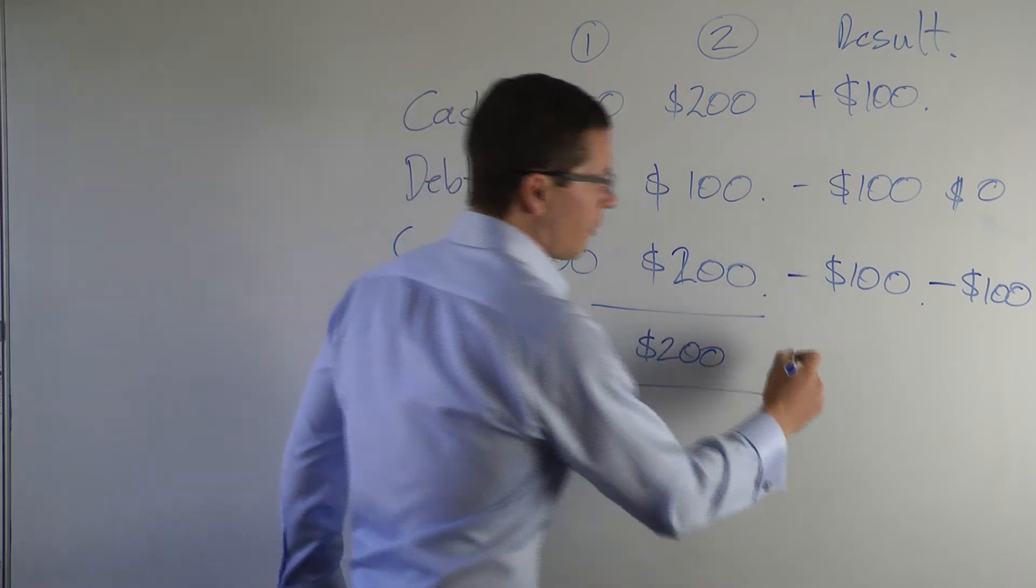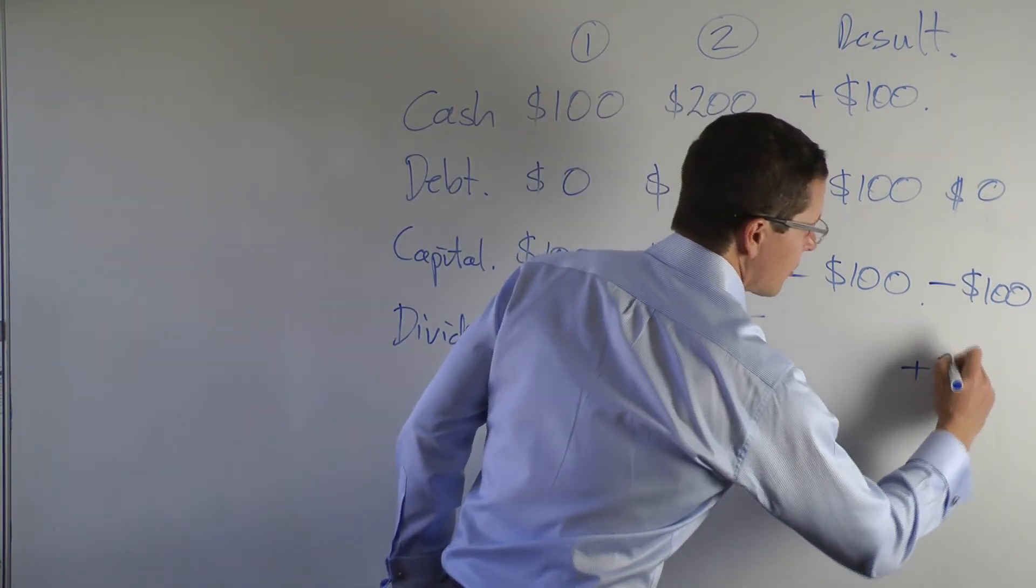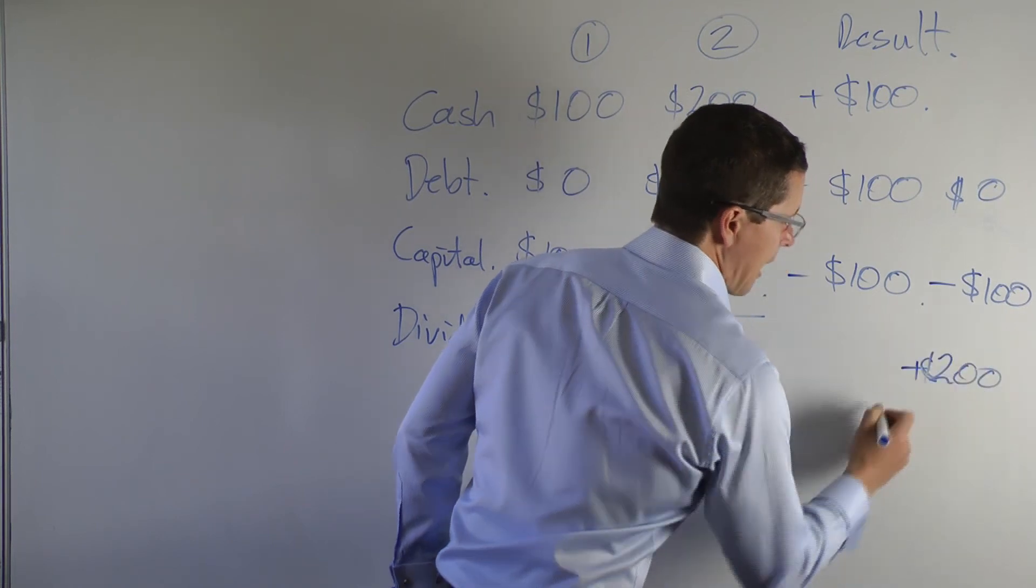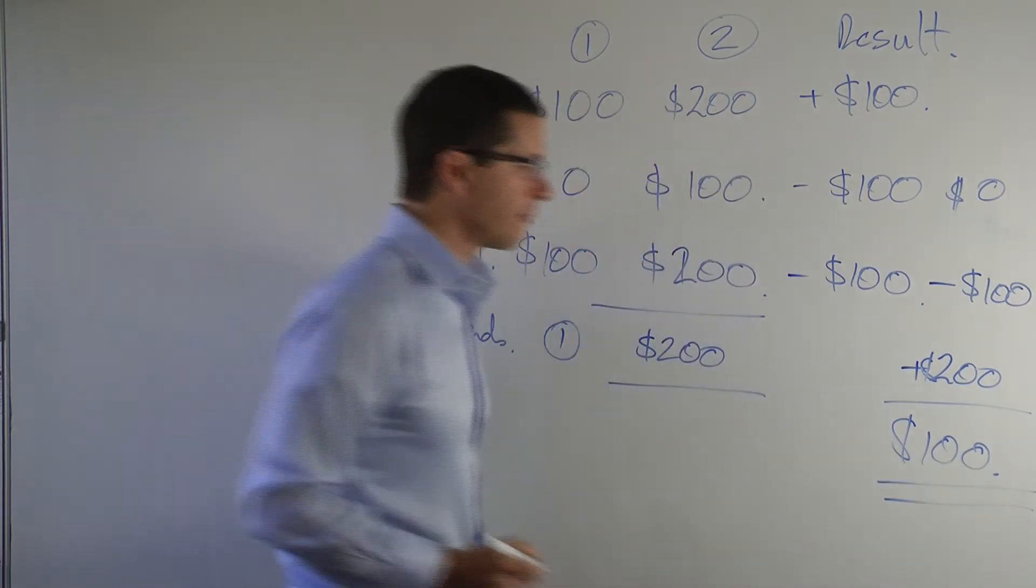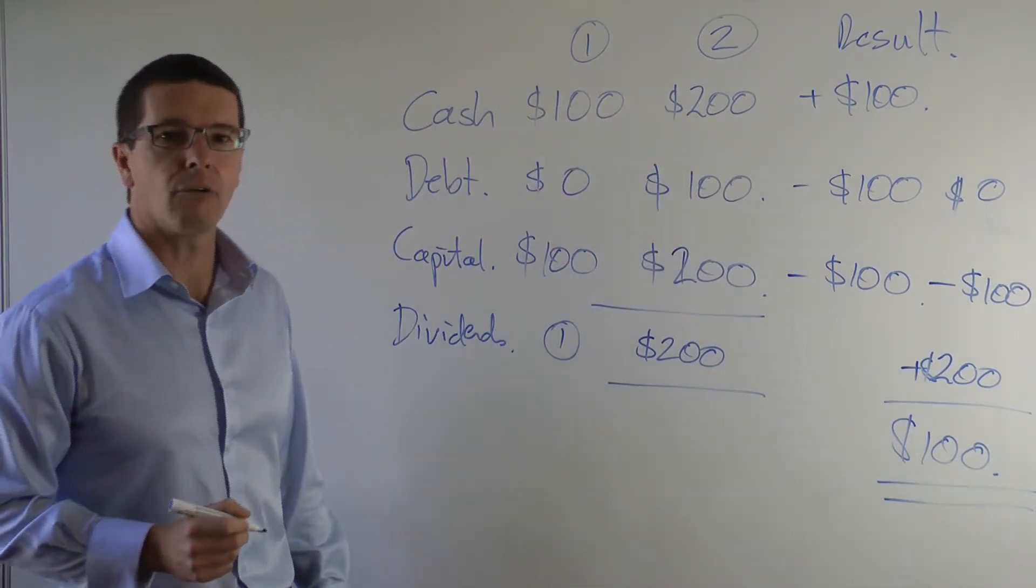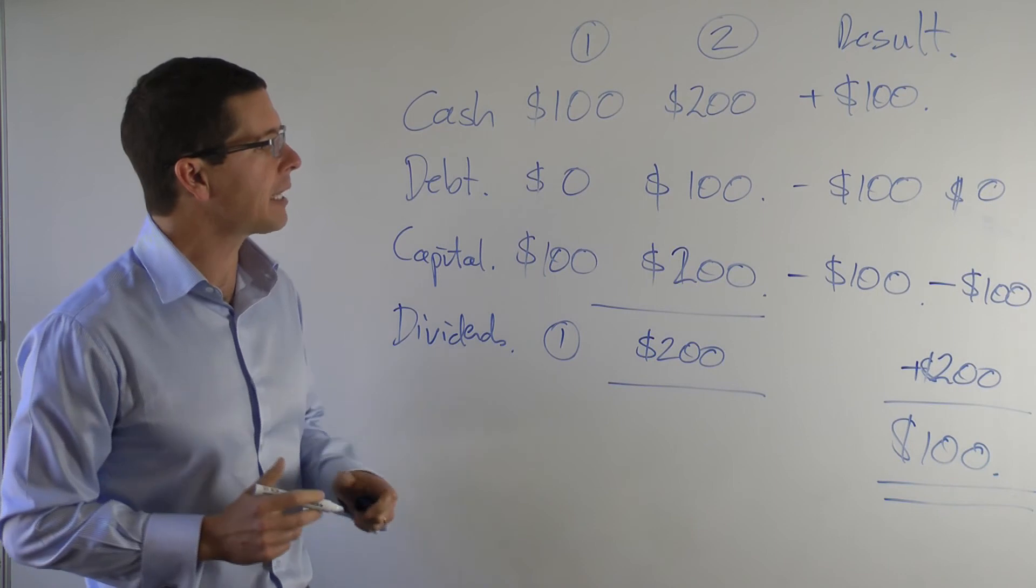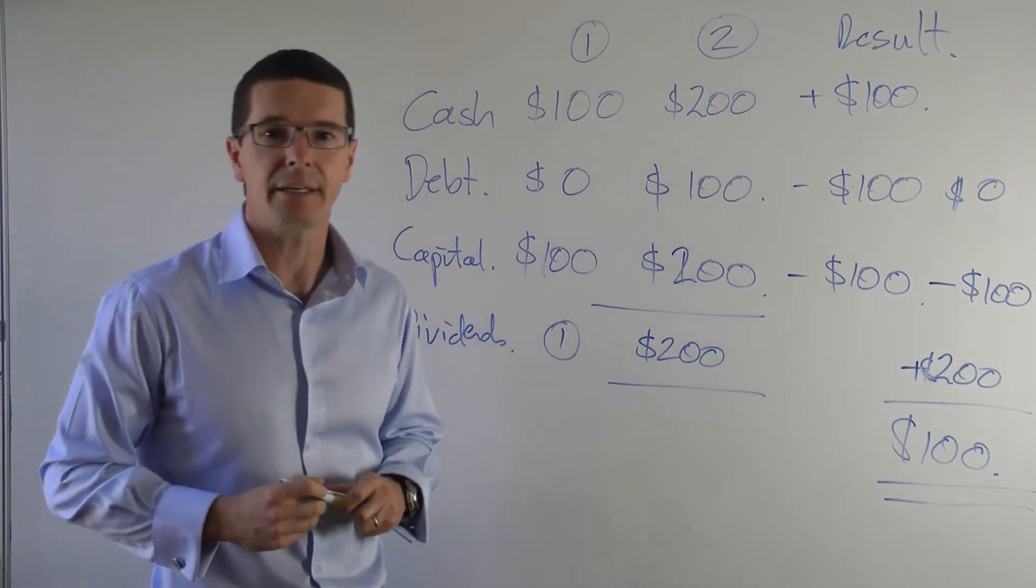And so what we do is we add back the $200 and we end up with the title: cash profit for the company for the year of $100. And that's how you calculate cash flow from the balance sheet.